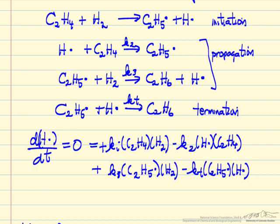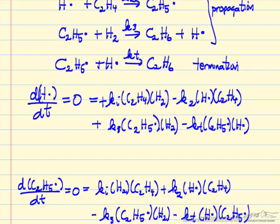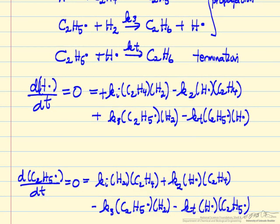We do the same thing for C2H5·, the ethyl radical: we make it in the initiation step, we make it again in the second step, we use it up in the third step, and again in the termination reaction.